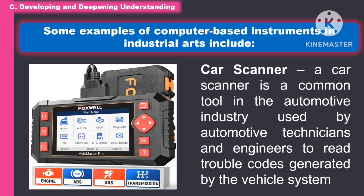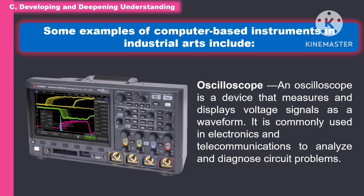The first example of a computer-based instrument is the car scanner. A car scanner is a common tool in the automotive industry used by automotive technicians and engineers to read trouble codes generated by the vehicle system. Another example is the oscilloscope, a device that measures and displays voltage signals as a waveform, commonly used in electronics and telecommunications to analyze and diagnose circuit problems.